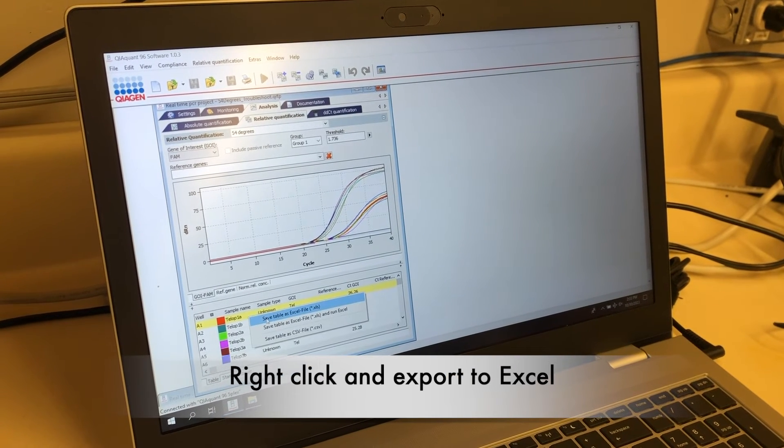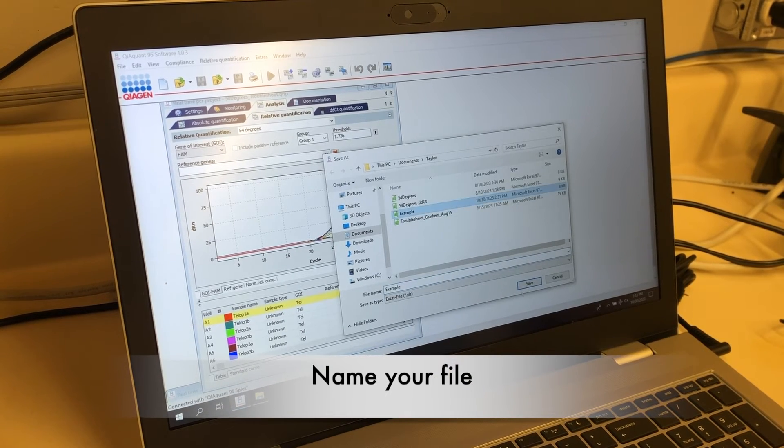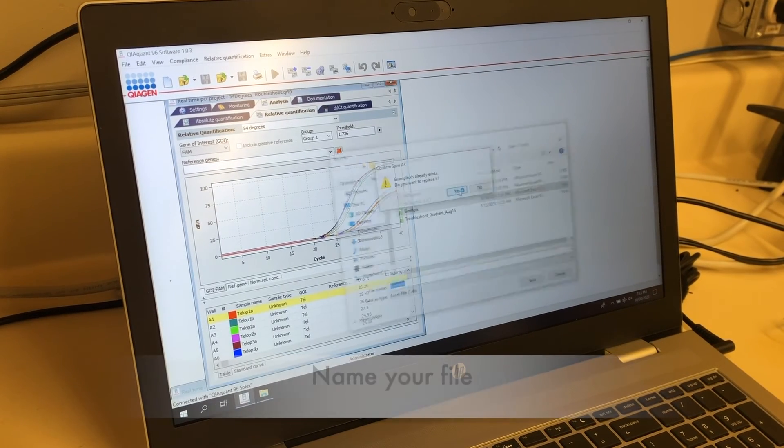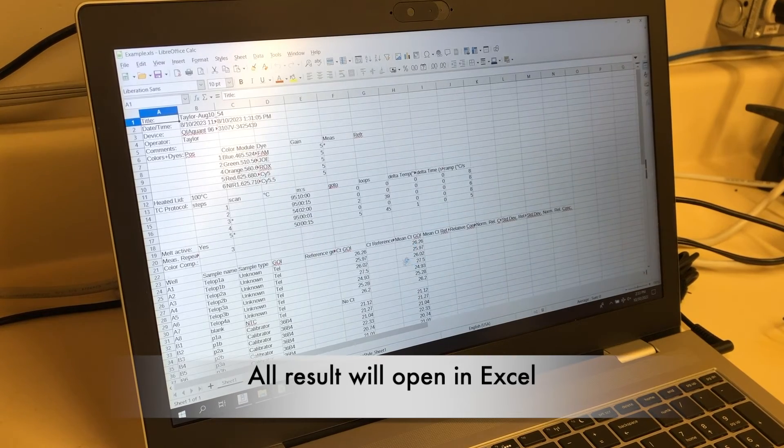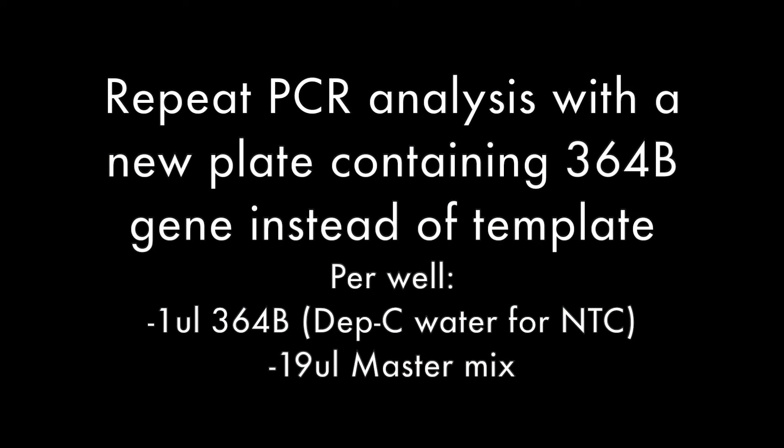Simply right click on your sample of choice, export to Excel, name your file. And all results for that sample will open in Excel. Repeat this protocol using the 36B4 gene instead of the telomere.